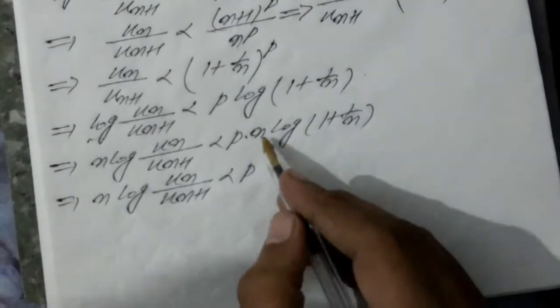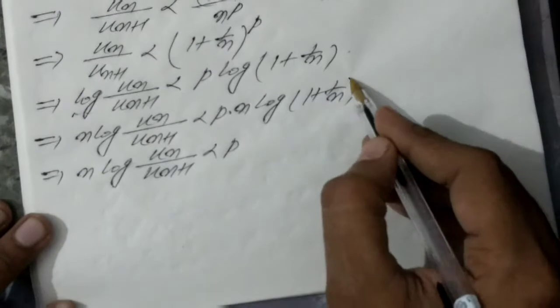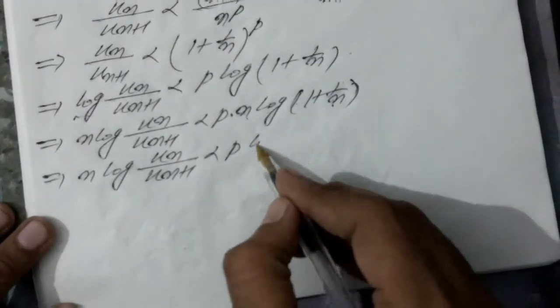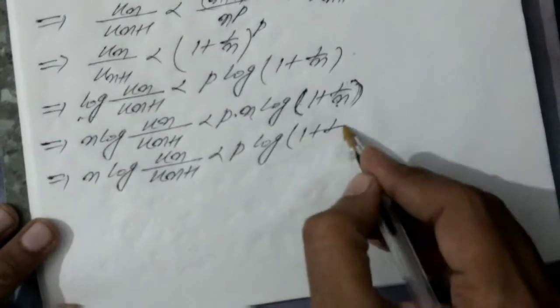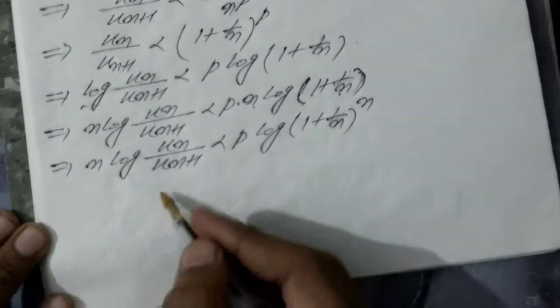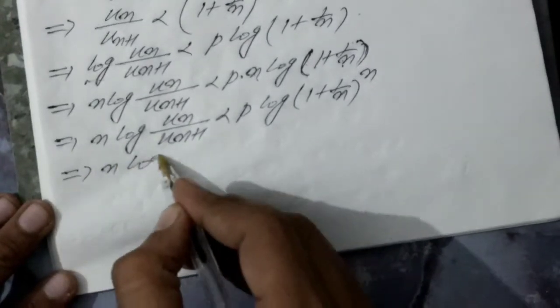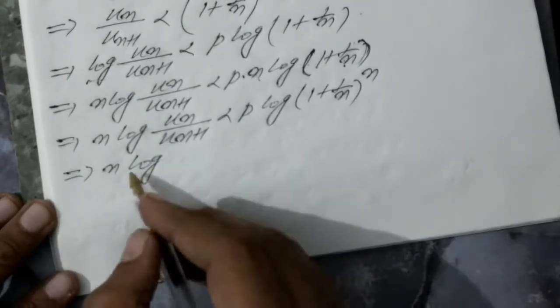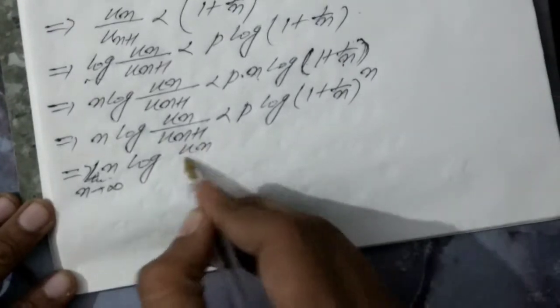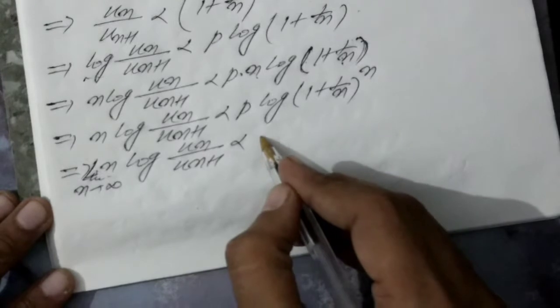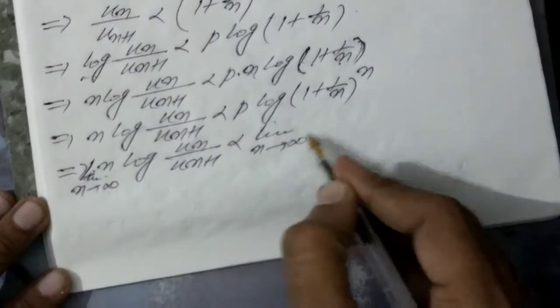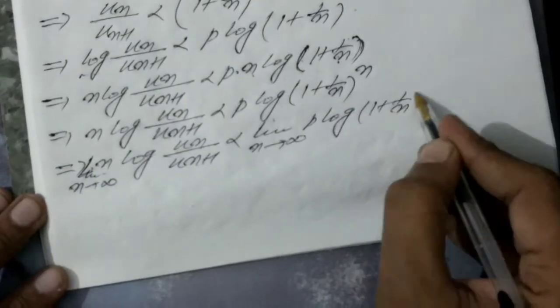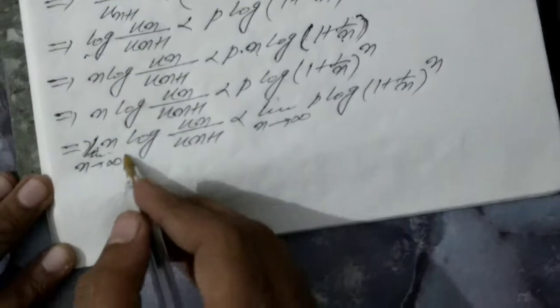Using the logarithmic property, the coefficient n goes into the power of the bracket, giving p·log(1 + 1/n)^n. Taking the limit as n tends to infinity on both sides, limit n→∞ of n·log(u_n / u_{n+1}) is less than limit n→∞ of p·log(1 + 1/n)^n.